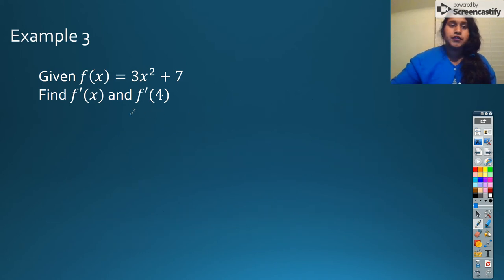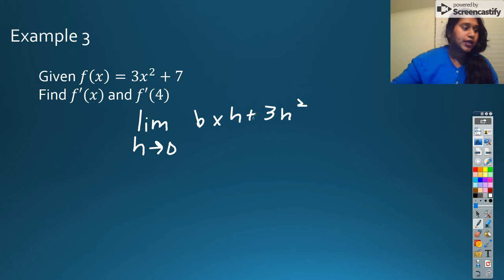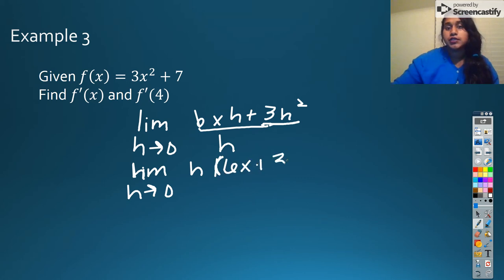So I need a new page. This is now going to be my limit as h approaches 0 of 6xh plus 3h squared all over h. So now I see an h that I can factor out. My limit as h approaches 0 of h times 6x plus 3h all over h. My h's are going to cancel out.